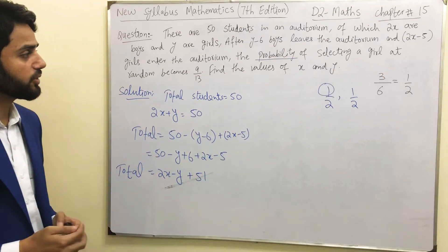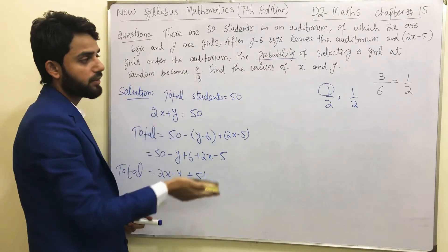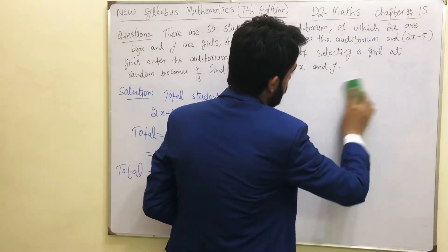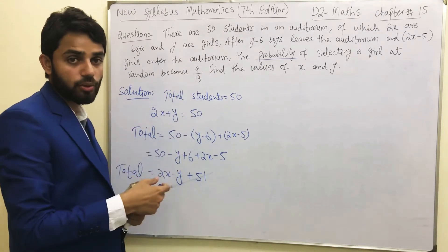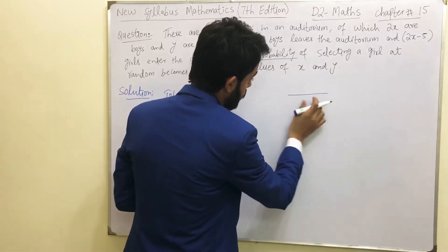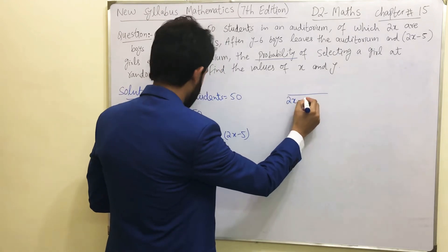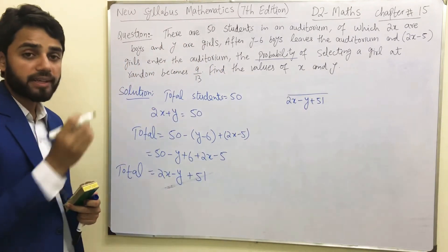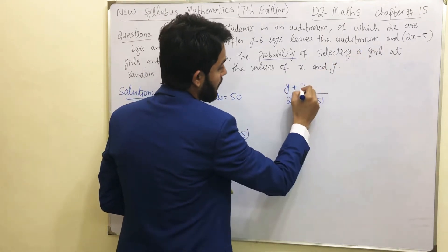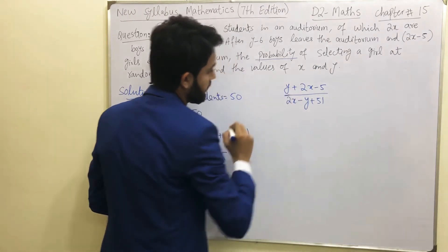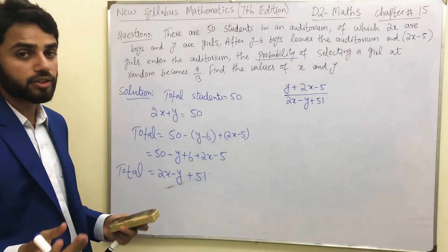They are saying the probability of selecting a girl at random is now 9 over 30. Using the probability formula, the denominator is the total number of students which is 2x minus y plus 51. The numerator is the number of girls currently in the auditorium — initially there were y girls, then 2x minus 5 more girls entered, so the number of girls is y plus 2x minus 5. So: (y + 2x − 5) over (2x − y + 51) = 9/30.